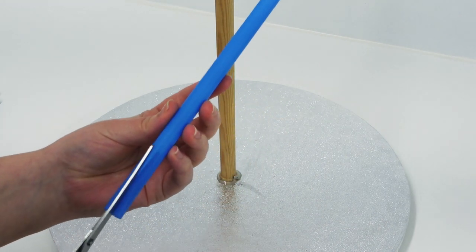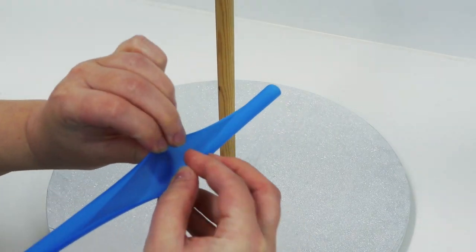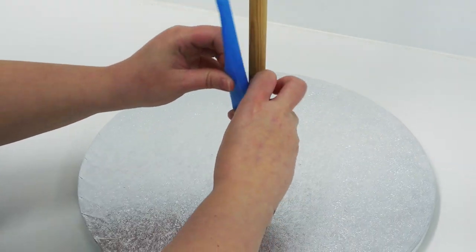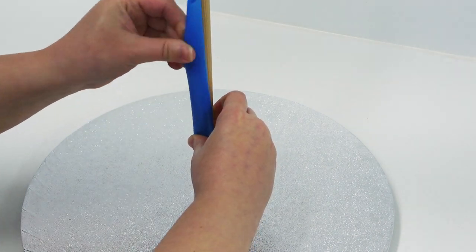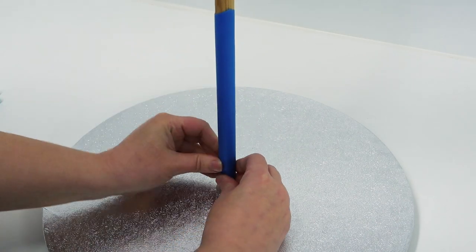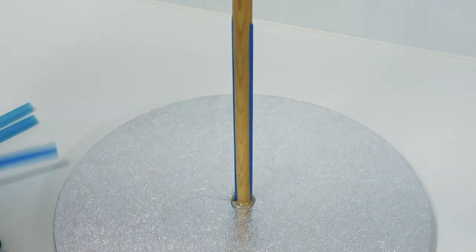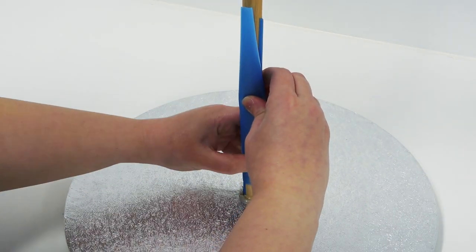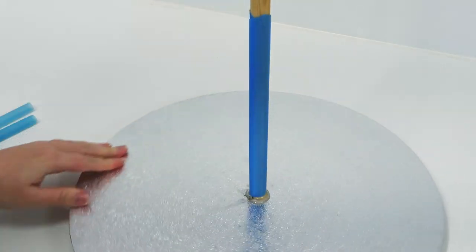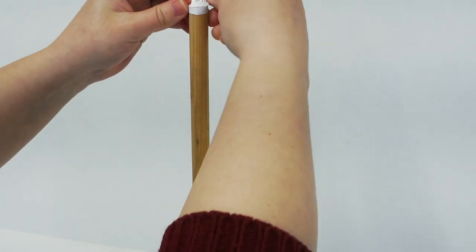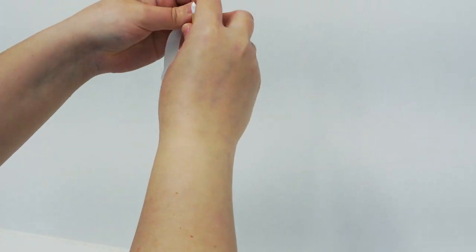To cover our dowel I'm using bubble tea straws as they really hug and attach themselves around it with it being the same cylindrical shape. Just cut it in half lengthways, open it up and it snaps itself around it. Just pop another one on the other side if you have a thicker dowel. For the top exposed wood I'm just taping this up before securing it all with more straws.